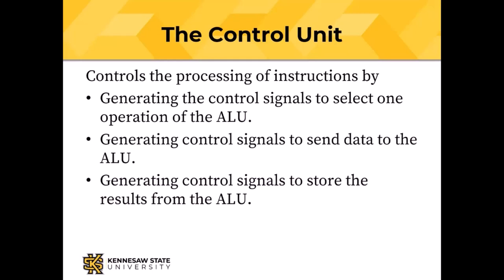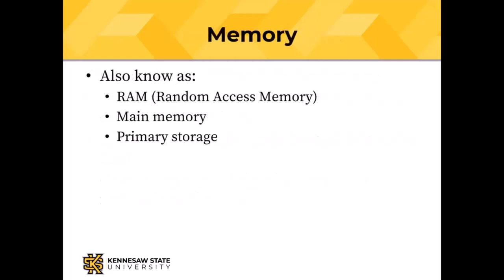The control unit also has to generate control signals to store the result — remember there was an enable line on the latch — and must generate the proper signals to select the data to go through the ALU. Memory, also called RAM or random access memory, is also called main memory or primary storage. Memory locations are of fixed size; in a modern computer those locations are 8-bit bytes.